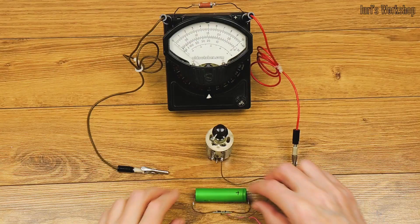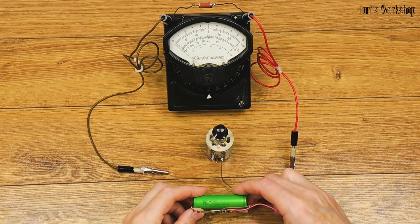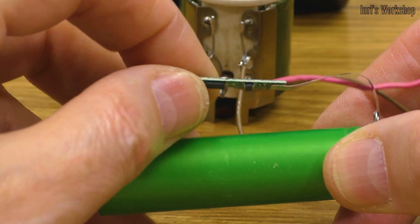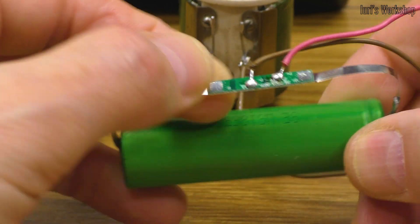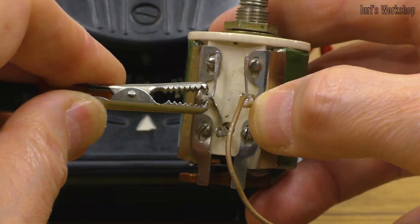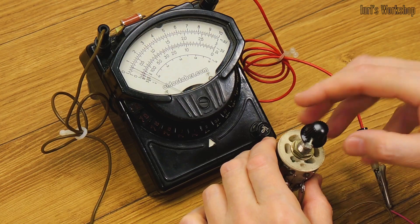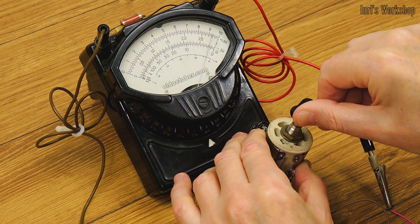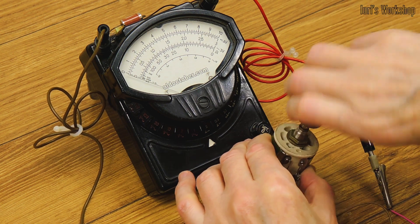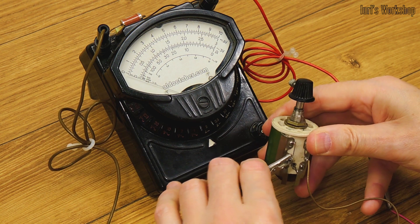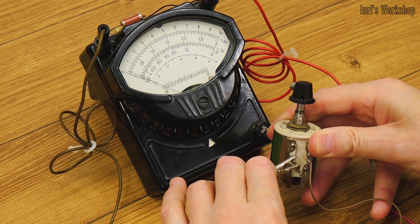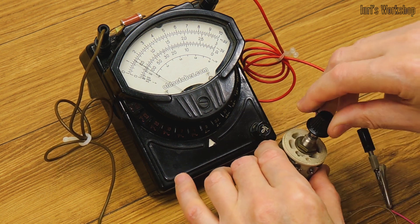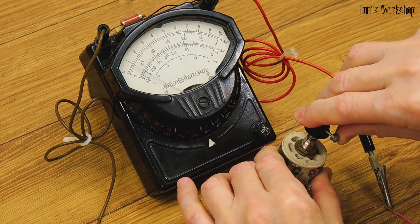The protection board is essentially a multi-functional reusable fuse. If the load current limit value is exceeded, the protection board will disconnect the load. To restore the circuit, it is enough to break the power for a short time. If the charge current or voltage is exceeded, the board will disconnect the battery from the charger.